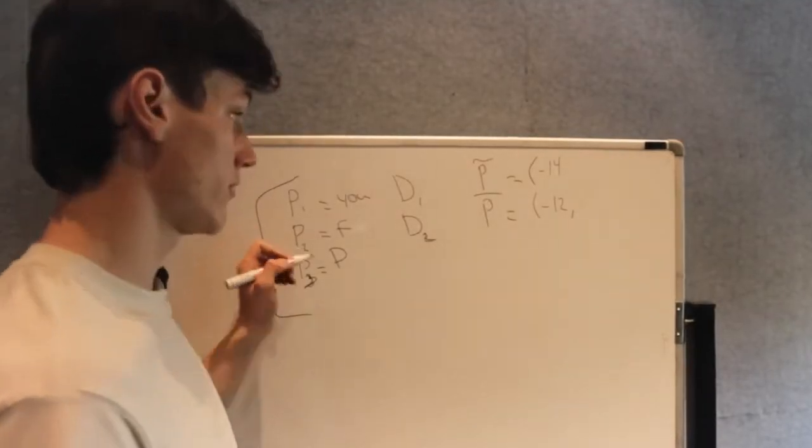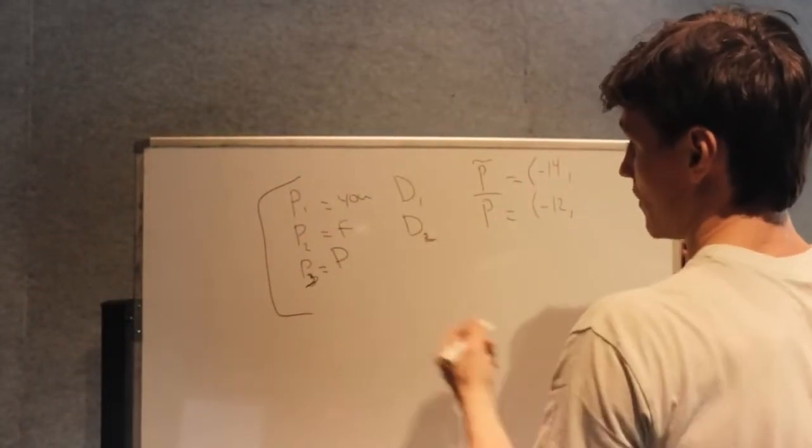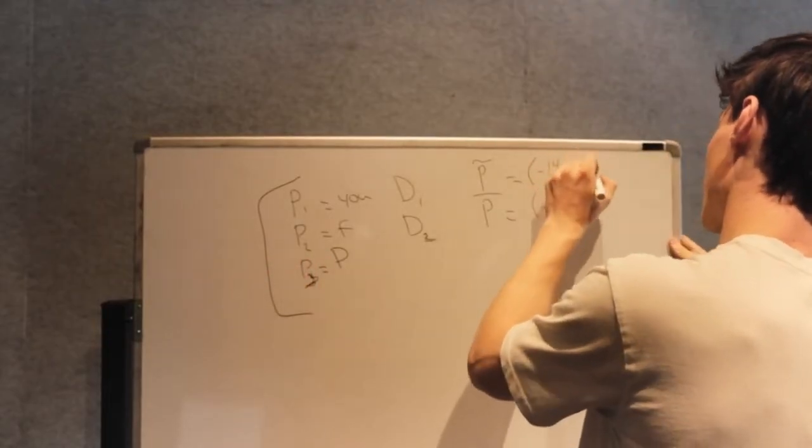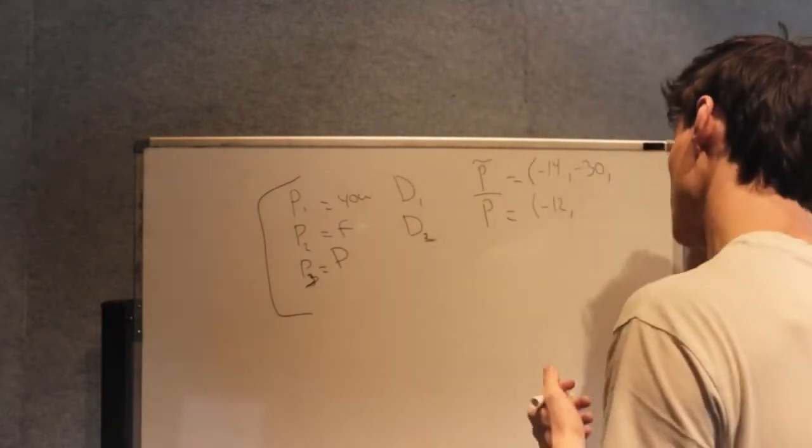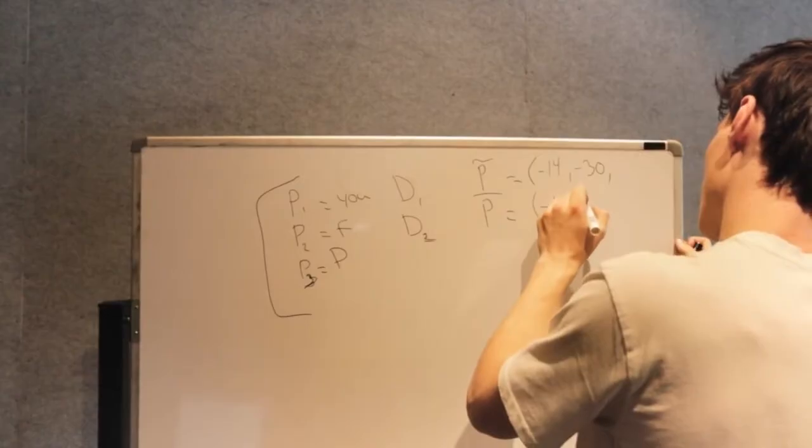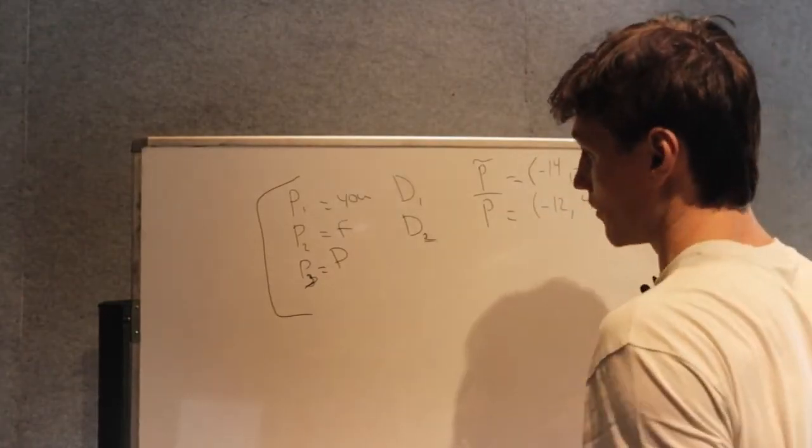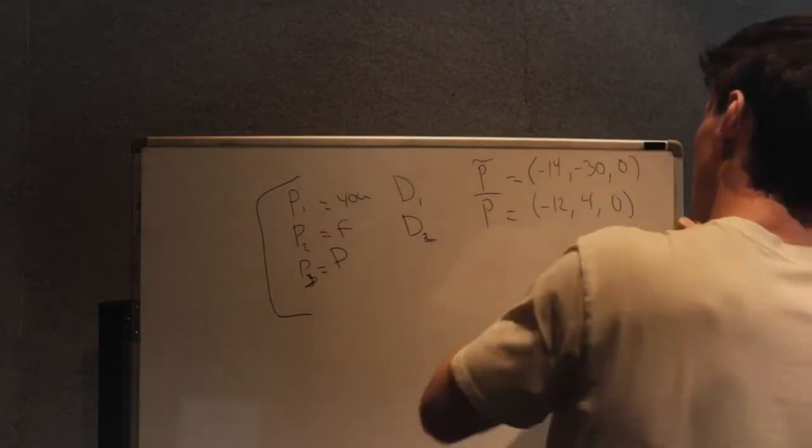But then there's also player two is your friend. And in one case, if you do screw them over, let's say player two is going to get a payoff of negative 30, because they're going to have to drop the class. In case two, they get a payoff of four because they cheated and got a better grade. And then the professor is kind of indifferent, the professor doesn't really care.